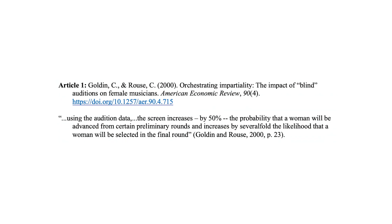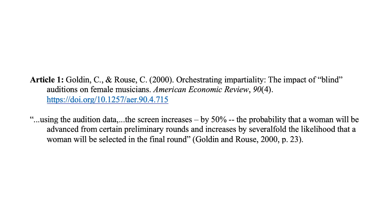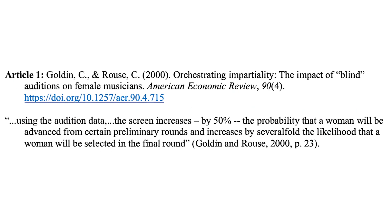So step number one was gather ten articles; step number two was read and highlight them. Step number three: quote everything you highlighted — word for word. And when you quote them, make sure to give a proper citation. For example: 'Golden and Rouse, Orchestrating Impartiality: The Impact of Blind Auditions on Female Musicians — using the audition data, the screen increases by 50% the probability that a woman will be advanced from certain preliminary rounds...' I just copied and pasted. It may be a little tedious, but in this approach we favor tediousness so we don't have to tax our brains too much when writing the paper.